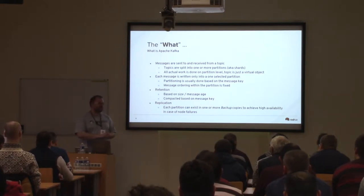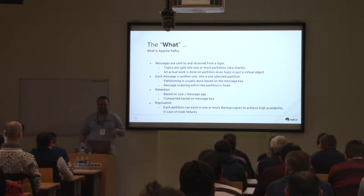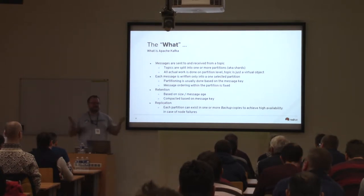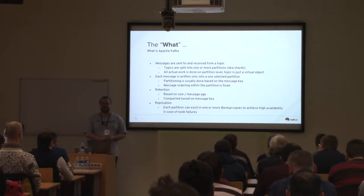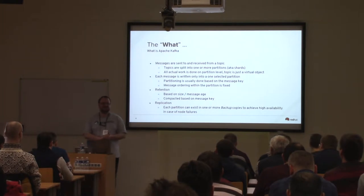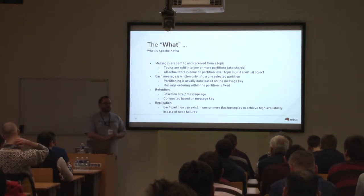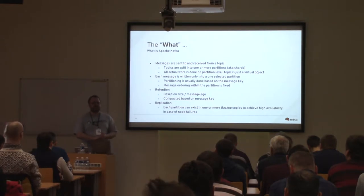There is also a special case called a compacted topic, where Kafka tries to keep the last message for a given key and remove older messages. If you're writing updates to users or orders and are only interested in the latest state, this is very useful because you can save a lot of disk space. That's a quick introduction to Apache Kafka. If you want more details, look at the slides from my yesterday's talk. This should be enough to discuss running Kafka on OpenShift and Kubernetes and the main challenges.